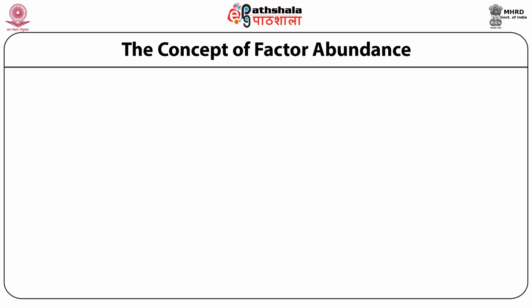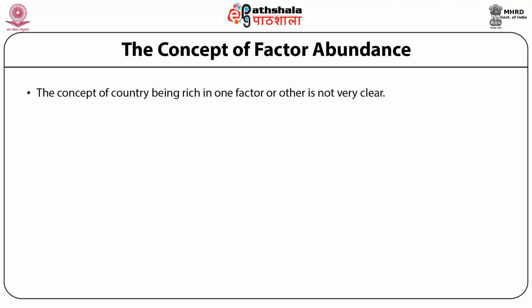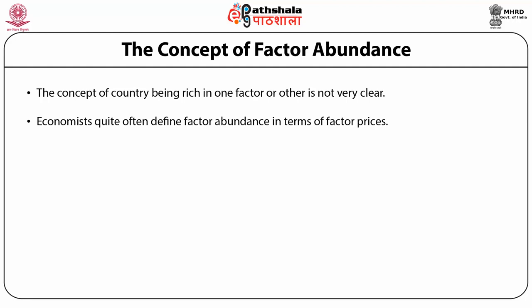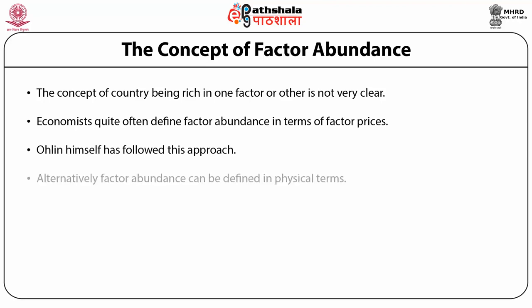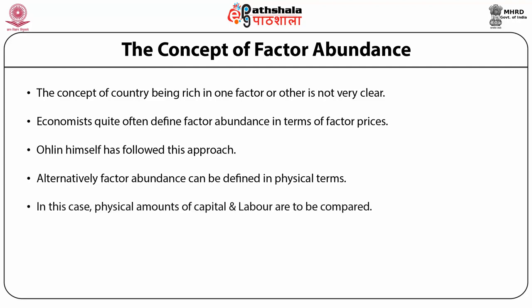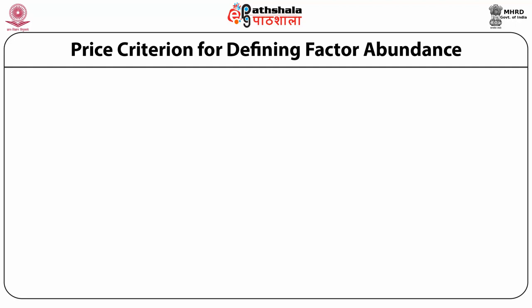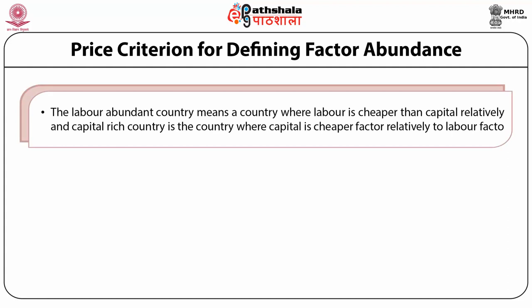Let us see the concept of factor abundance. The concept of a country being rich in one factor or another is not very clear. Economists quite often define factor abundance in terms of factor prices — Ohlin himself followed this approach. Alternatively, factor abundance can be defined in physical terms, where the physical amounts of capital and labor are compared. The price criteria for defining factor abundance states that a labor-abundant country is one where labor is cheaper than capital relatively, and a capital-rich country is one where capital is the cheaper factor relative to labor.